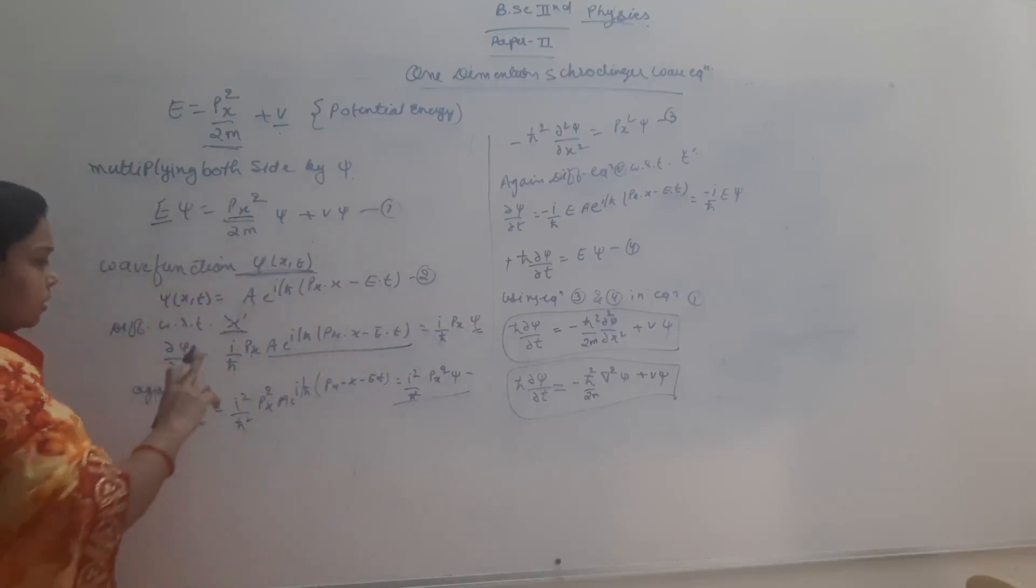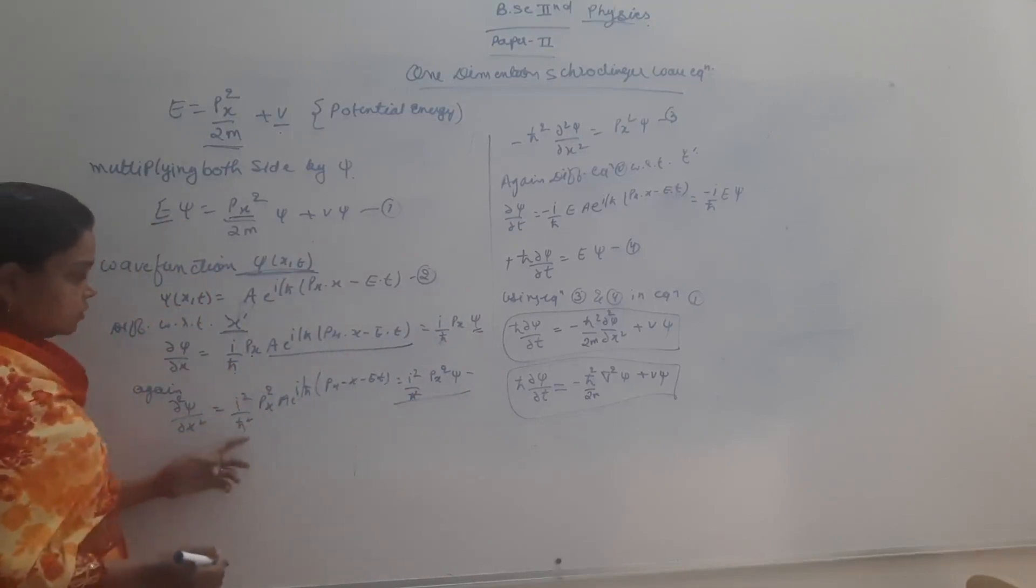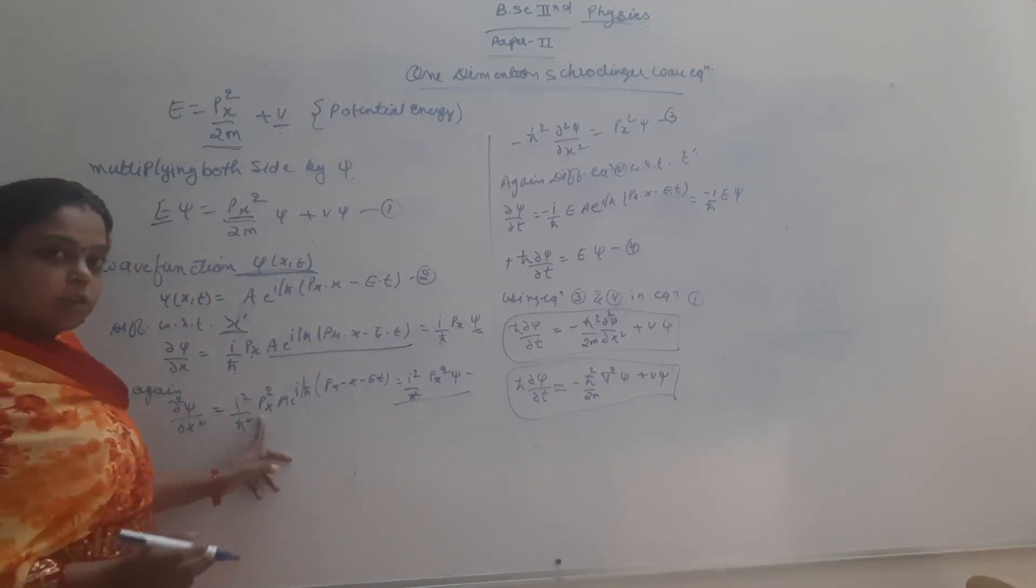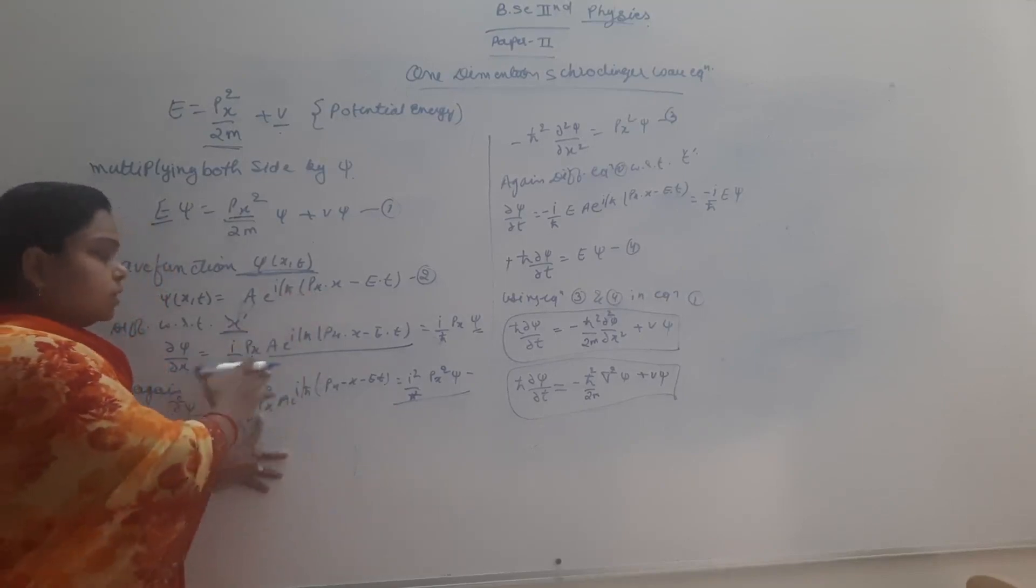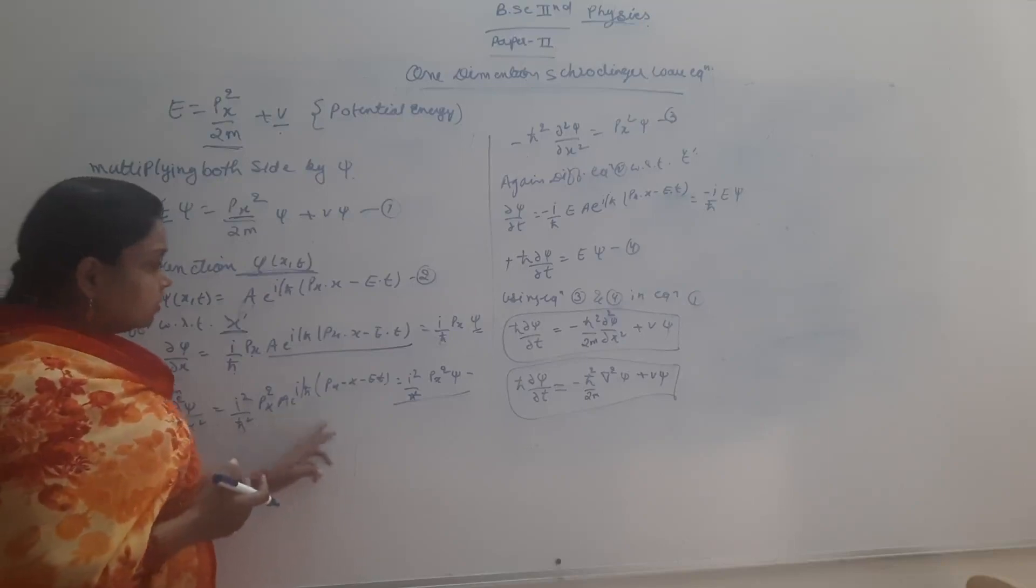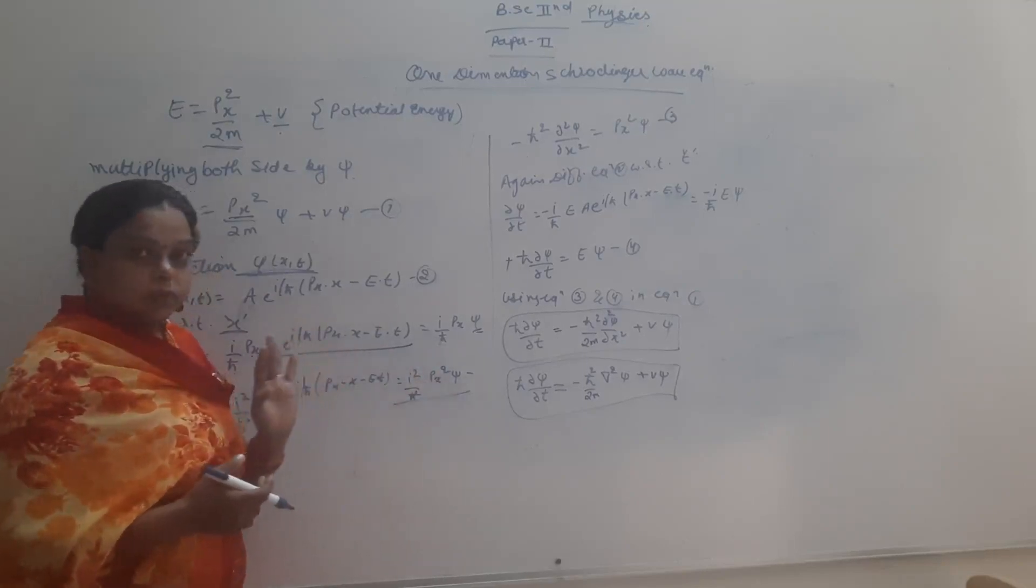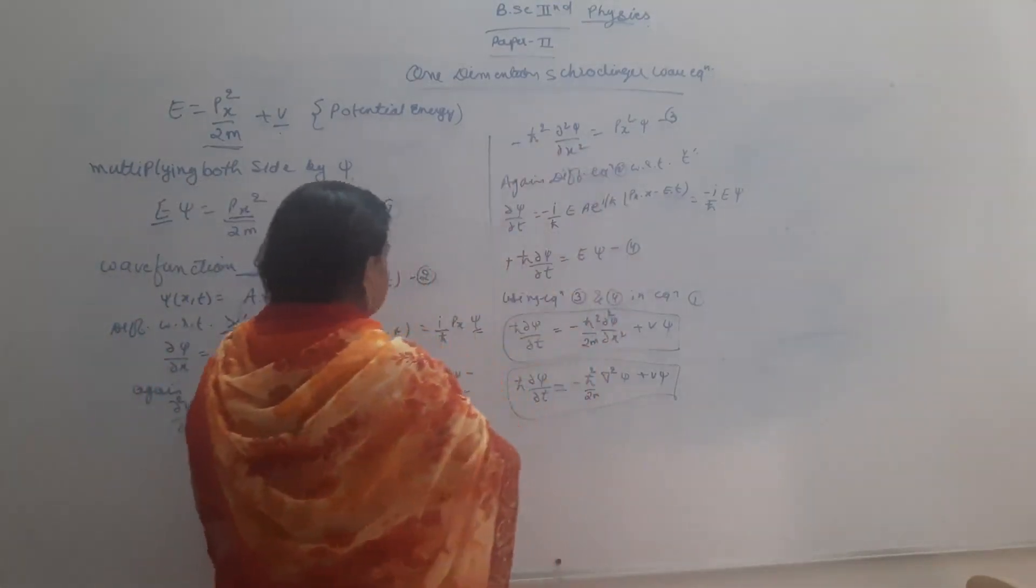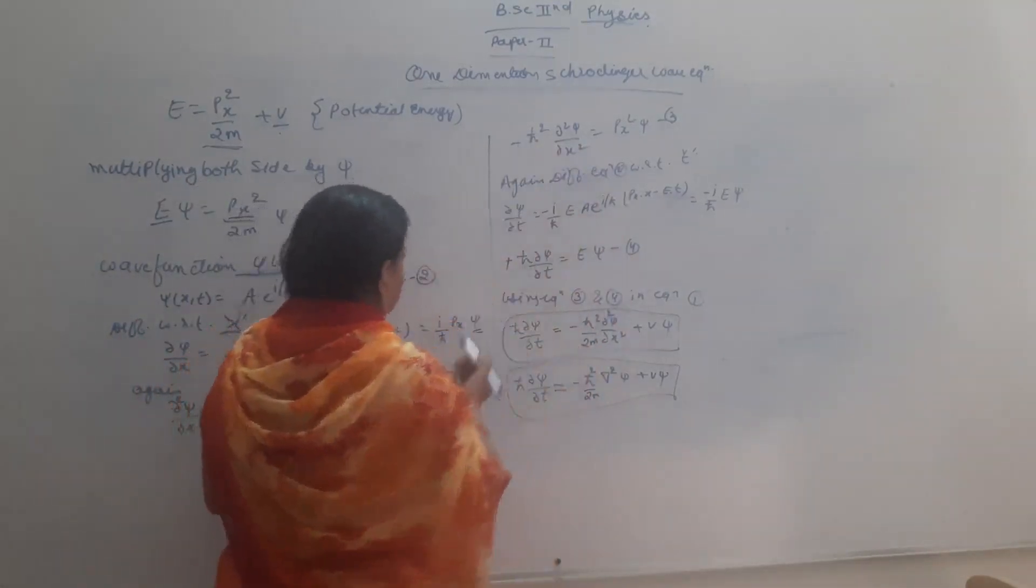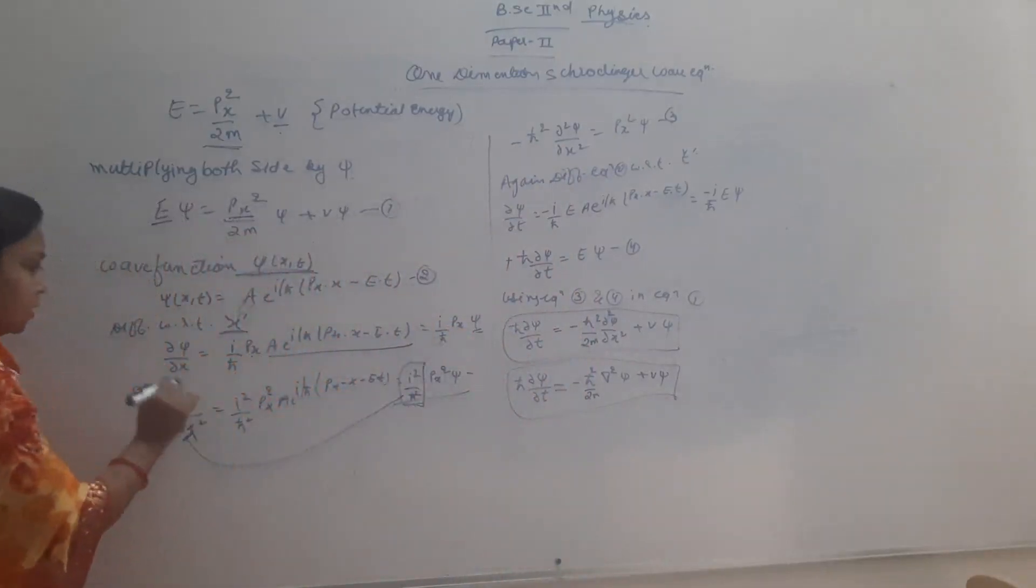This equation equals alpha square by h square. The equation is equal to alpha square by h square.